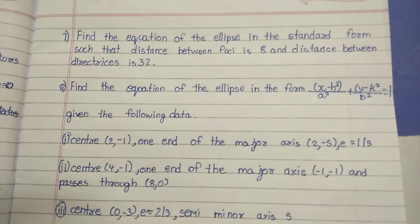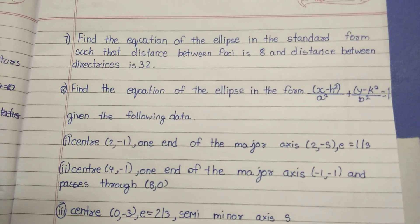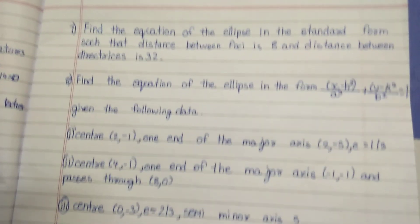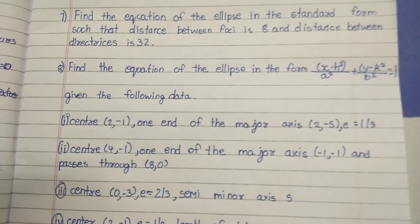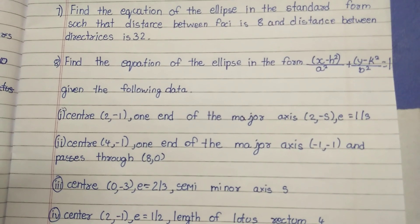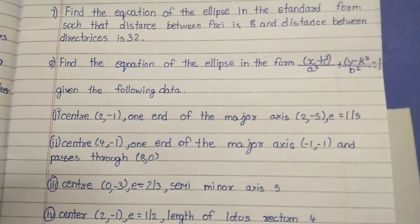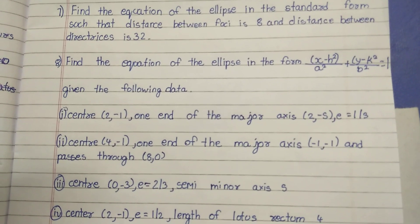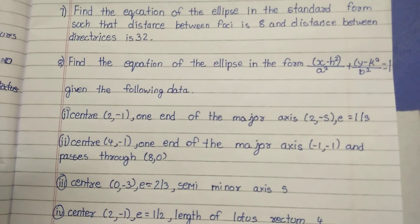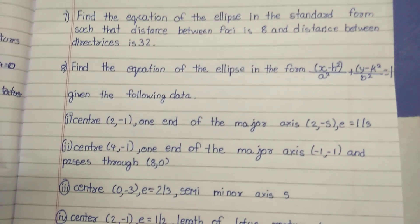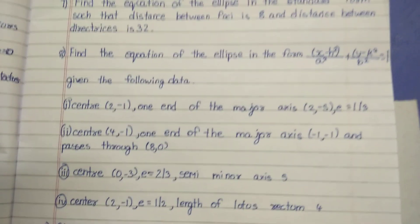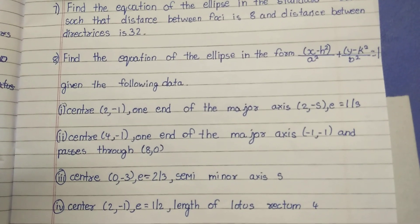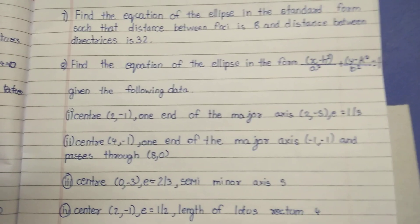Find the equation of the ellipse in standard form with eccentricity equal to 1/3. We will use the equation to find out, making different models if we have more than one — we will use a small example.